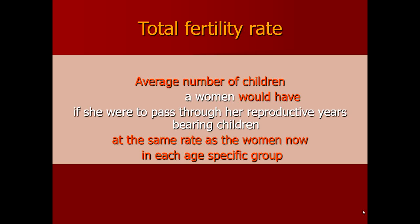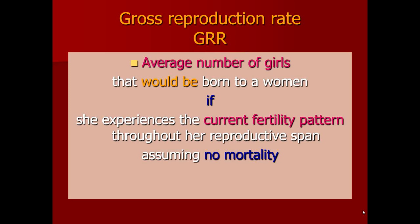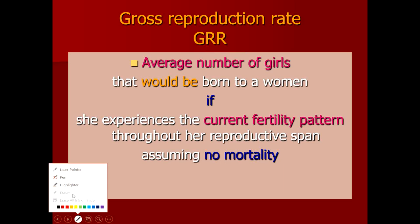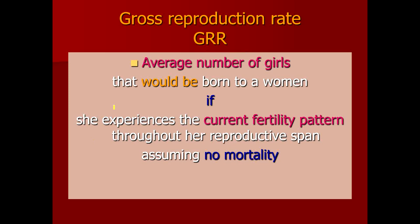If we calculate the total fertility rate based only on female newborns, we get the gross reproduction rate. The gross reproduction rate is the average number of girls that would be born to a woman of reproductive age group if she experiences the current fertility pattern through her reproductive span. In gross reproduction rate, the numerator contains only the total number of female live births.